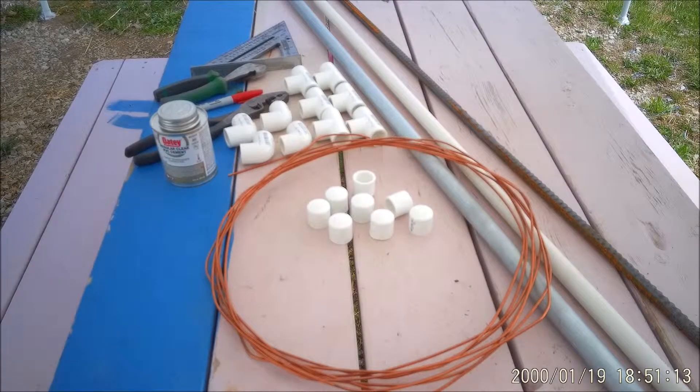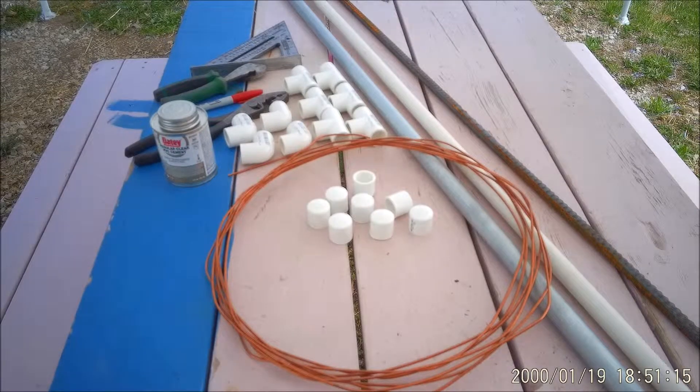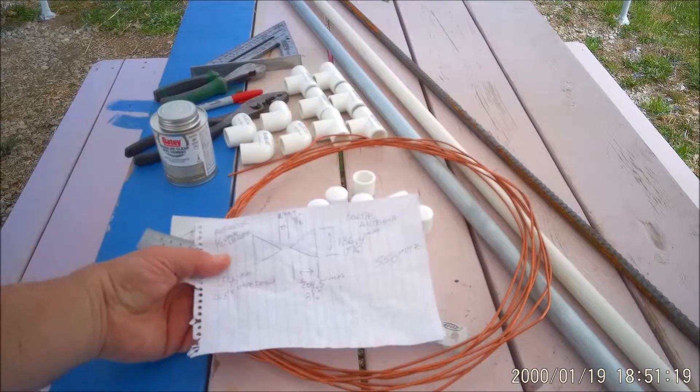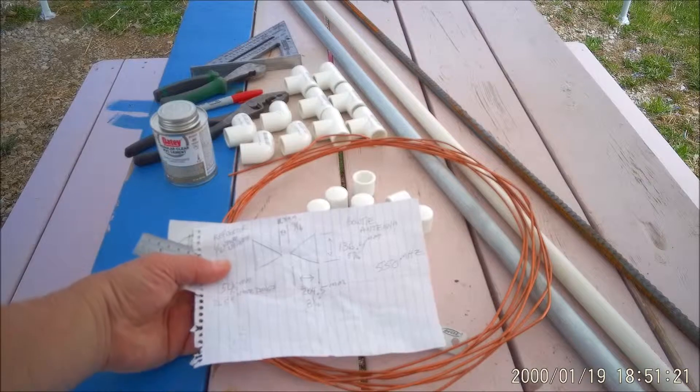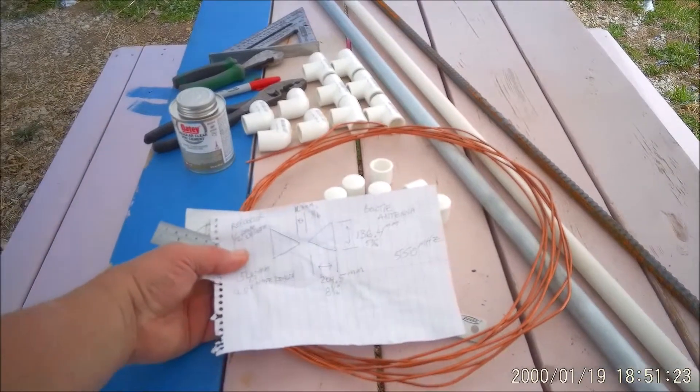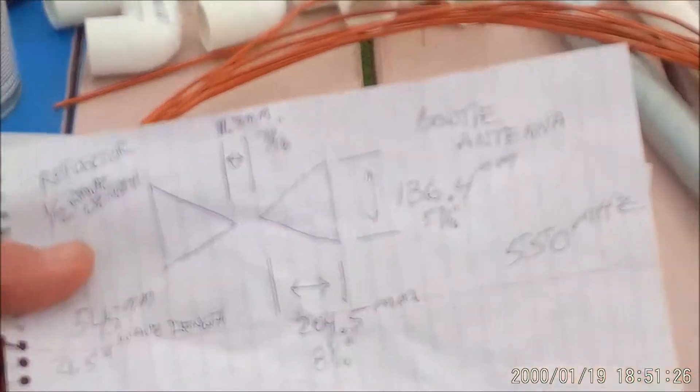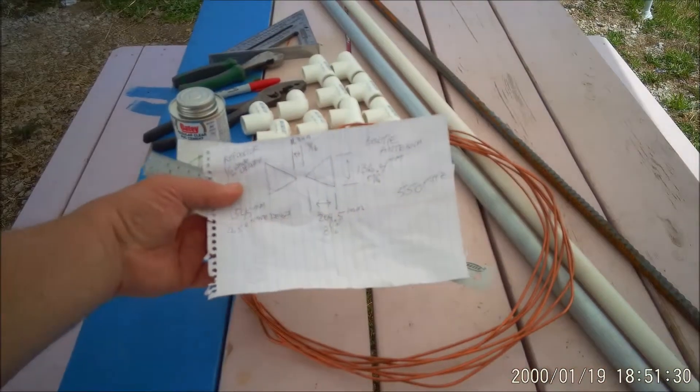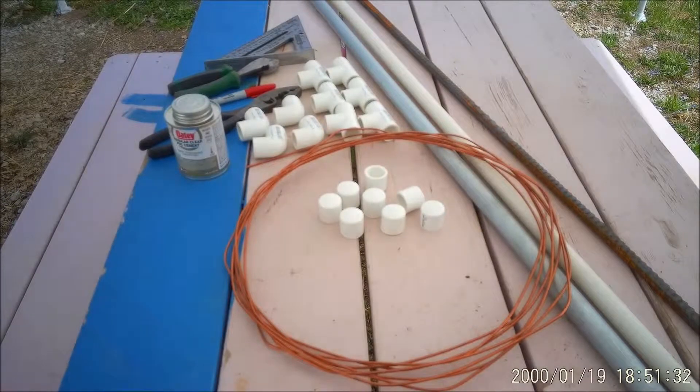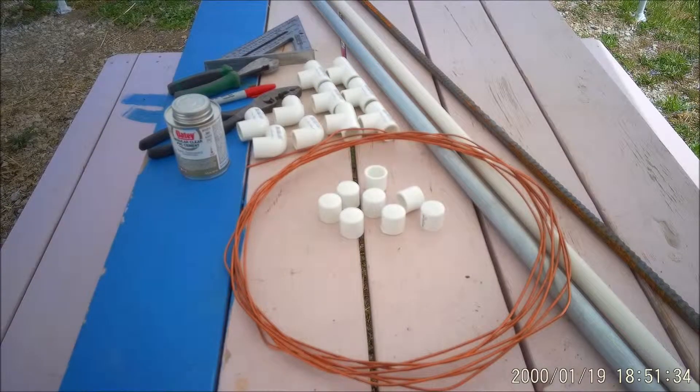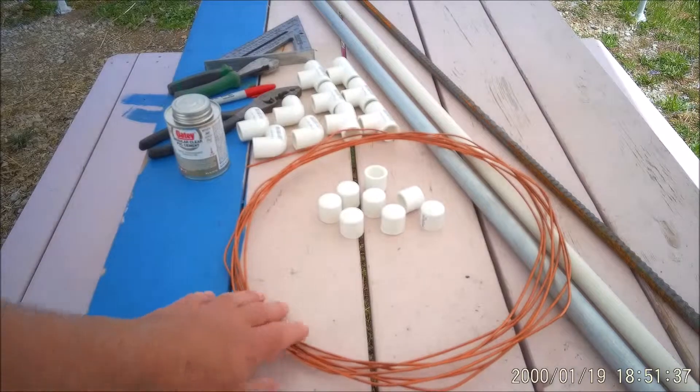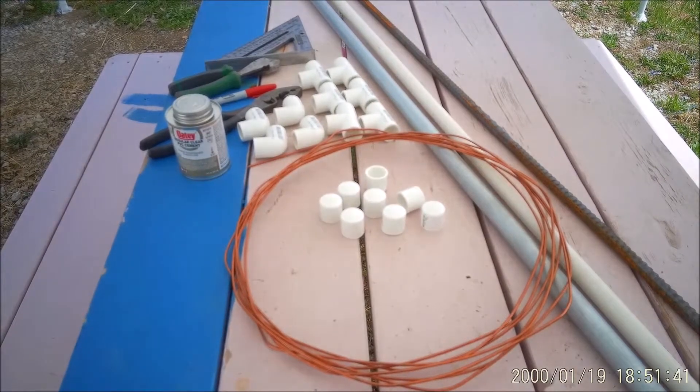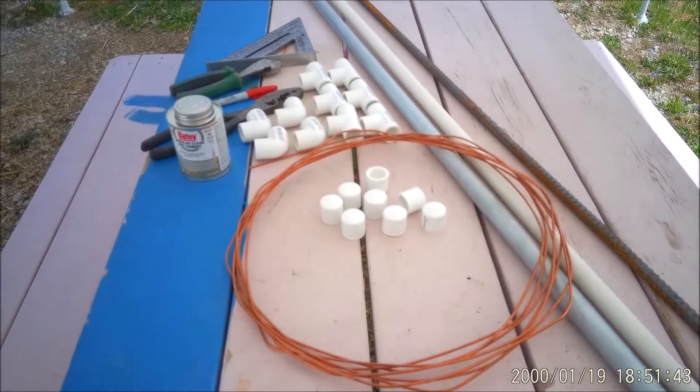Okay, we're going to make a TV antenna for the new digital signals. I have a few facts and figures here that I'll put in the description. This will be the parts that we need: some solid copper wire, some PVC fittings, I'll write those down so you know how many to get of each kind, and a little bit of glue.